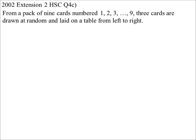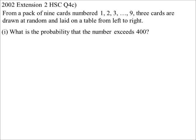Let's have a look at this one. 2002 paper. So we've got nine cards marked one to nine, three cards drawn at random, and we're going to place them on a table from left to right, I guess creating a three-digit number if you like. What's the probability that that number that we put down exceeds 400?